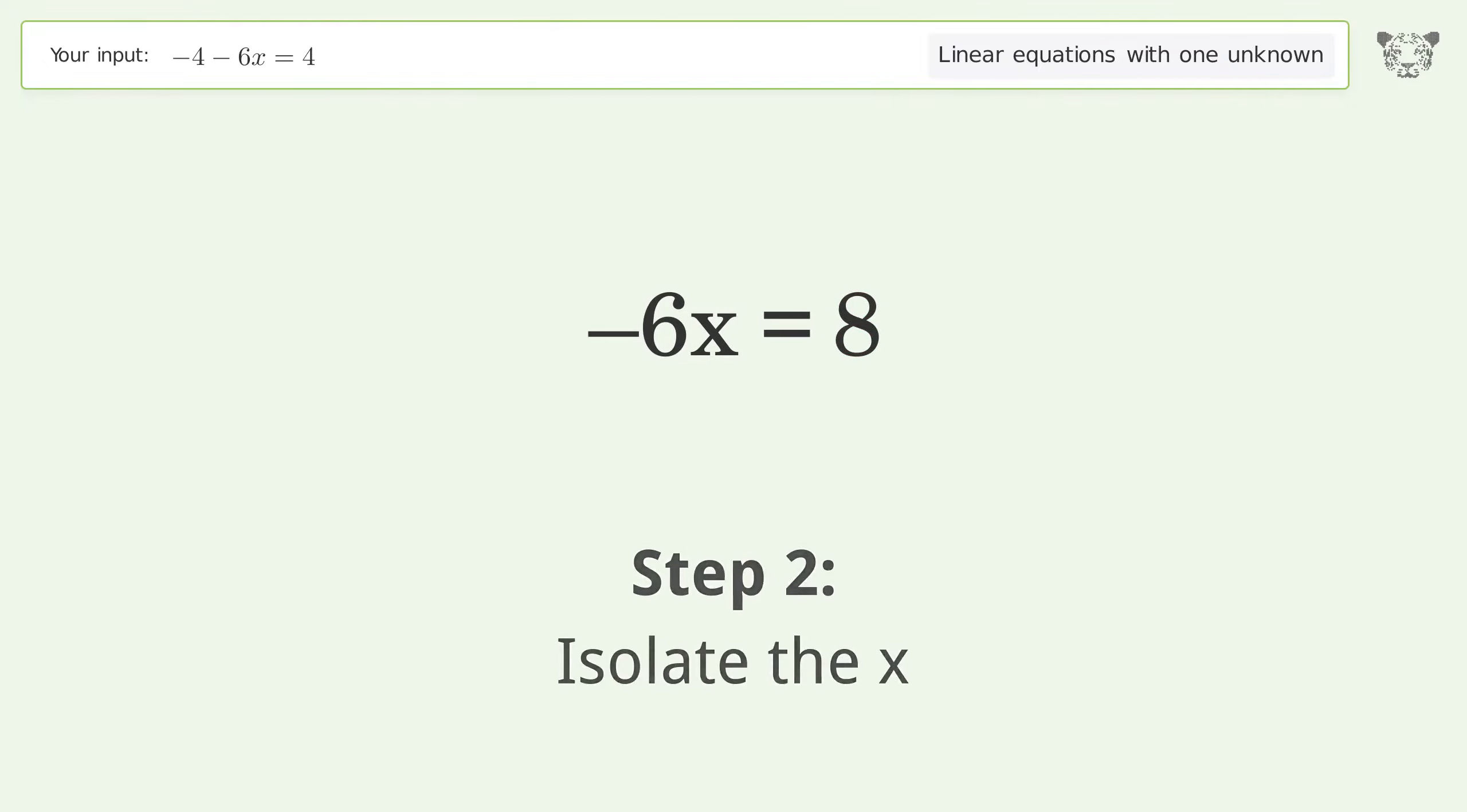Isolate the x. Divide both sides by negative 6. Cancel out the negatives.